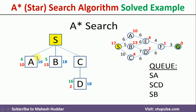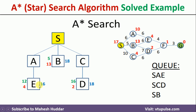We now explore node A. From A, we can go to E (since S is already traversed). The total cost is 6 (S to A) + 6 (A to E) = 12, plus the heuristic value of E which is 4, giving 12 + 4 = 16. We add S→A→E with cost 16 to the queue. This is the minimum, followed by S→C→D and S→B both at 18.